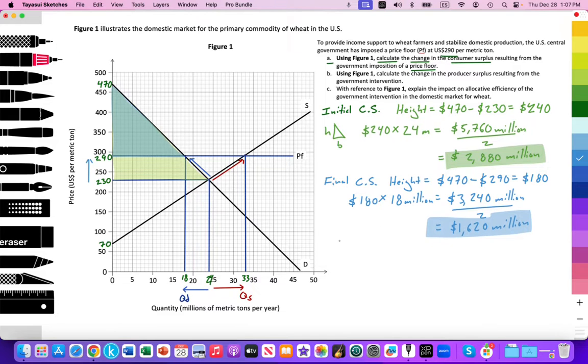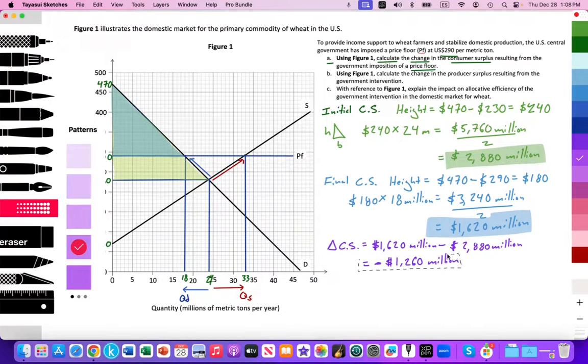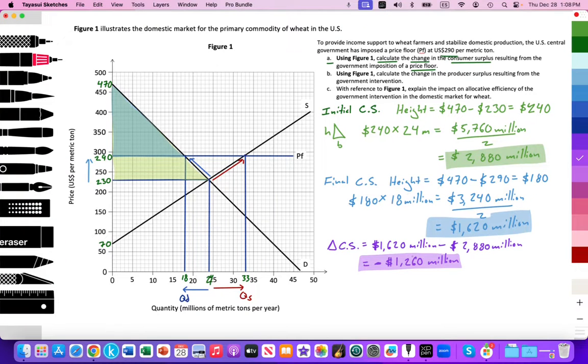And what I need to do is figure out the difference between them. So the change in the consumer surplus will be equal to the final value of 1,620 million minus the initial consumer surplus of 2,880 million. And that's going to equal a decreased consumer surplus of minus 1,260 million. And that could be my final answer. So I'll highlight that. That would be my final answer. That consumer surplus, the change, consumers have experienced a reduction in the consumer surplus by 1,260 million. That's one way we can calculate this.